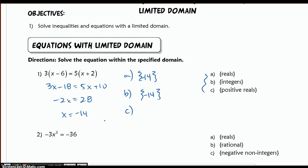In part C, it's asking only for positive reals. So we have to decide, is negative 14 a positive real? Since it is not a positive real, we have an empty set. We can also denote this with no solution, because there are no valid solutions within this restricted domain.